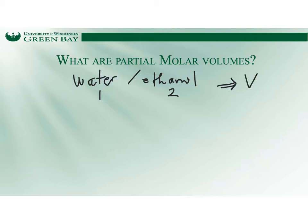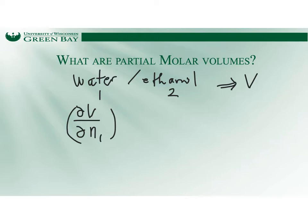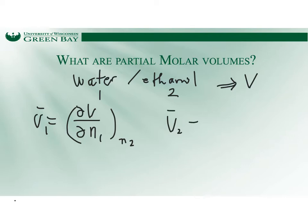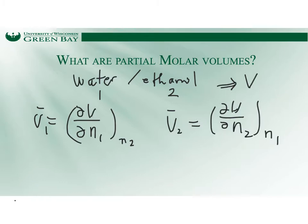The partial molar volume of water is defined as the change of the total volume per change in the number of moles of water, holding the ethanol moles constant. I call this V̄1 — the bar means per moles of water. Similarly, the partial molar volume of ethanol, V̄2, equals the change of volume per change in ethanol moles when holding the number of moles of water constant.